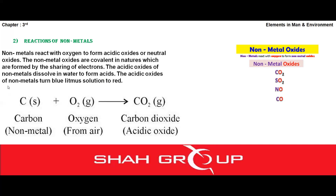The acidic oxide of non-metals turns blue litmus solution into red. We use a litmus paper indicator to identify acids and bases. Acids turn blue litmus paper red. So non-metal oxides, being acidic in nature, will turn blue litmus paper red, confirming they are acidic.